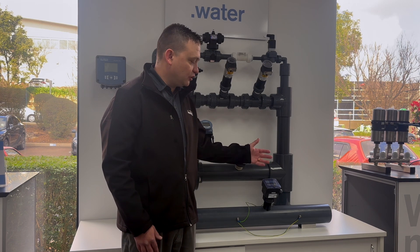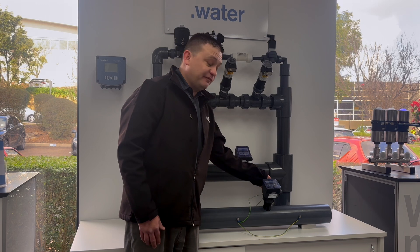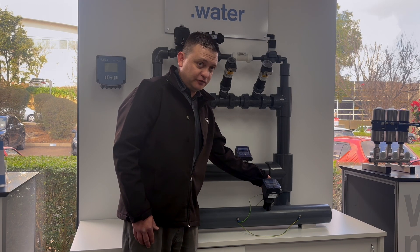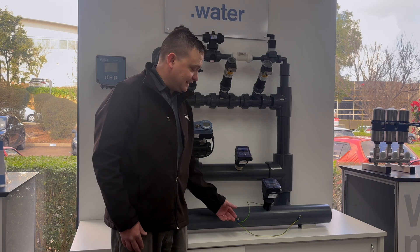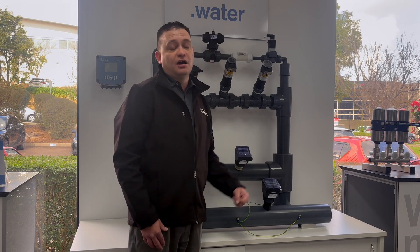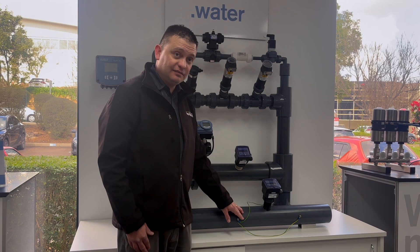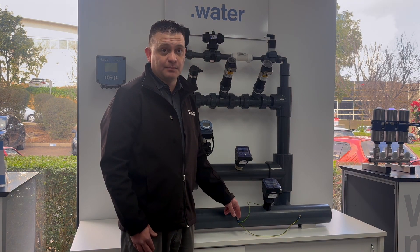Step two, we want to make sure the unit is properly earthed. We have various earthing points displayed on our demonstration unit. First point is on the unit itself to ensure the electronics are properly earthed, but also important are the upstream and downstream points on the pipework, properly earthed with earthing studs, especially in a PVC setup to reduce the effects of EMF.